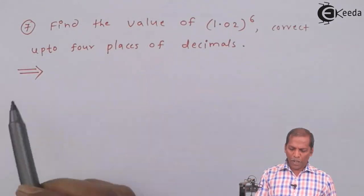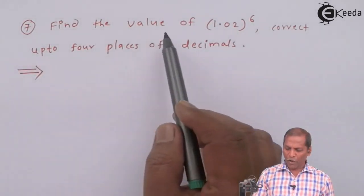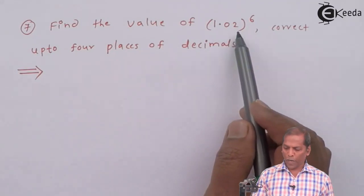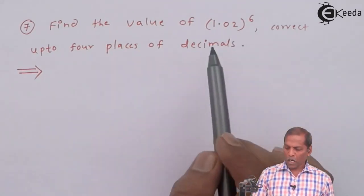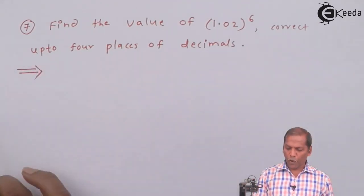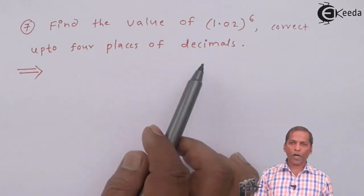The problem number 7 is find the value of (1.02)^6 correct up to 4 places of decimals.